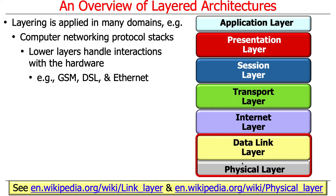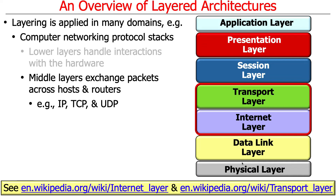The lower layers in a layered protocol stack describe how interaction takes place with the transmission media — the physical part, like Ethernet, wireless, wired connections, cellular protocols, or Wi-Fi. The middle layers deal with how packets are exchanged end-to-end across different routers, with classic protocols including the Internet Protocol, TCP, and UDP — for getting information sent reliably or unreliably across a network.